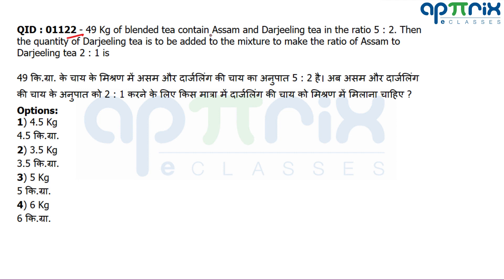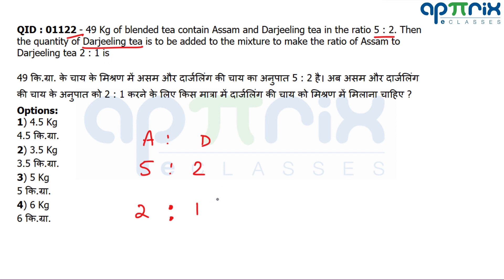Question 22: 49 kg of blended tea contains Assam and Darjeeling tea in the ratio 5:2. You need to find the quantity of Darjeeling tea to be added to make the ratio 2:1. The key insight is that only Darjeeling tea is being added, so the quantity of Assam tea is not going to change. Keep that in mind — only the Darjeeling component increases.